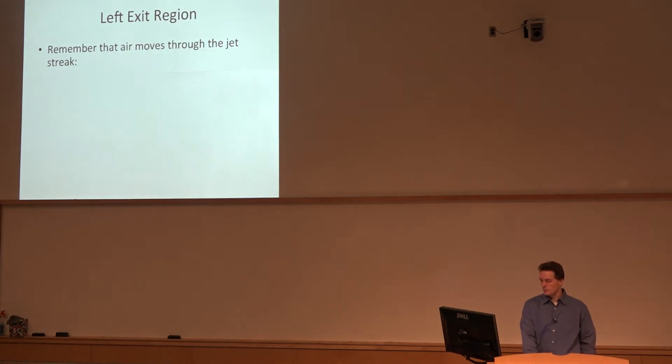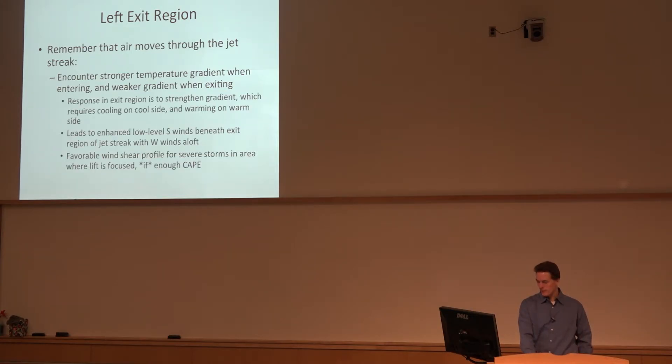The air moves through the jet streak. It encounters stronger temperature gradient when it enters and a weaker temperature gradient when it exits. We can look at this in terms of frontogenesis, what's happening as air moves through the jet streak and the response to that.